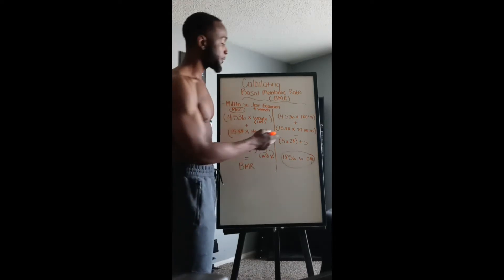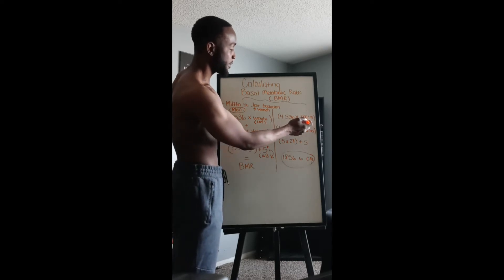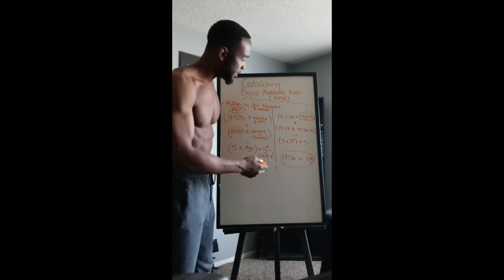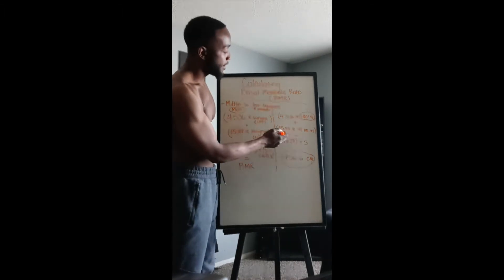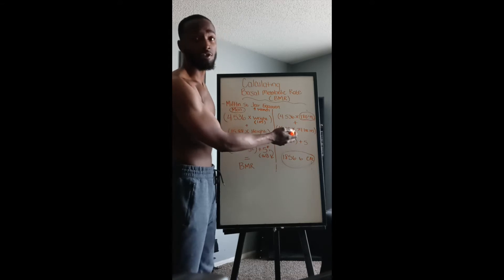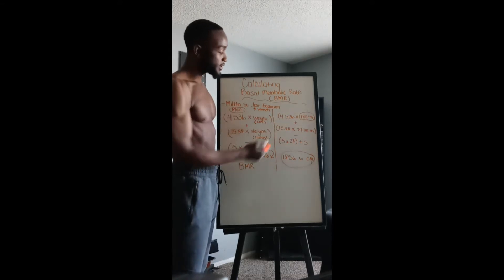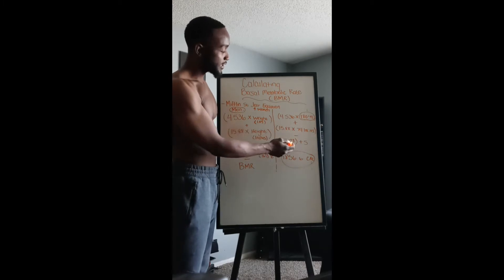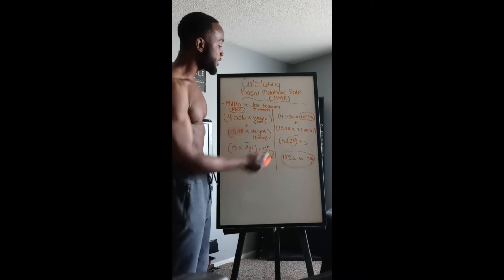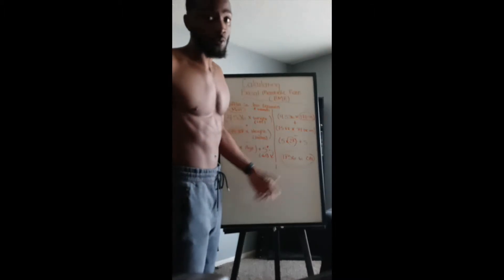I went ahead and plugged my numbers in. I did 4.536 times 180 pounds, which is roughly what I weigh right now. Then you're going to add 15.88 times your height in inches — I'm roughly six foot two, so that's 74 inches. Then you're going to subtract 5 times your age — I'm currently 28 years old, so I put 28.